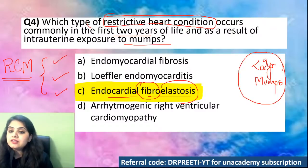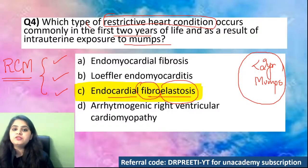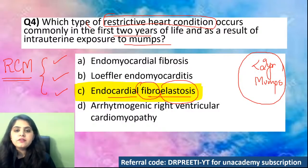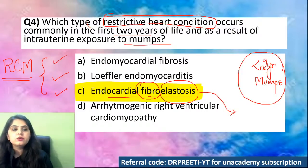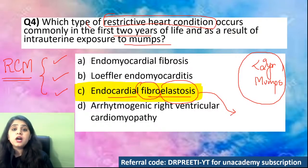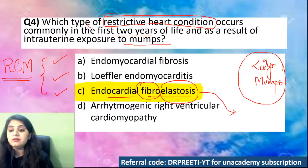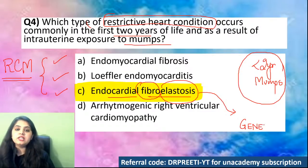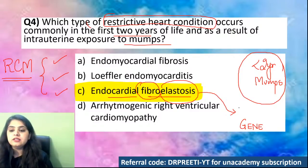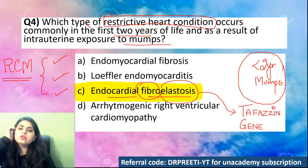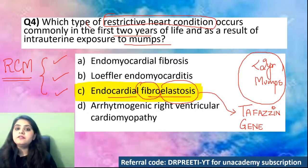In endocardial fibroelastosis, fibrous tissue and elastic tissue are laid down in the endocardium. The associated gene mutation is the taphazin gene (TAZ gene). Endomyocardial fibrosis is seen in adolescents and adults, not children — so you should have ruled that out immediately. Loffler's endomyocarditis — as soon as you hear the word Loffler, the cell that should come to mind is eosinophils. Loffler's will have an increase in eosinophils.